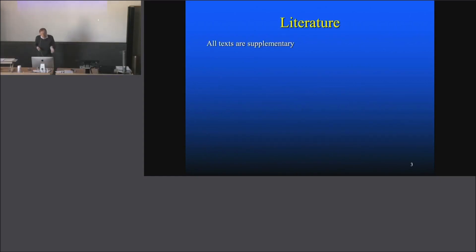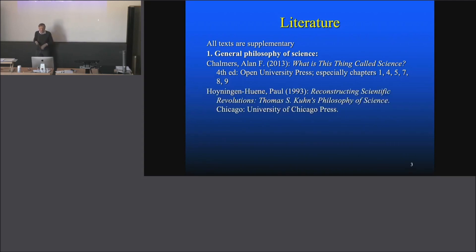All literature is supplementary. There's tons of literature—you can work for hours in the library on philosophy of science. So I'm just giving you a few suggestions if you're interested. In general philosophy of science, there's a fairly good textbook from Chalmers: What Is This Thing Called Science? The chapters relevant here are 1, 4, 5, 7, 8, and 9. You're allowed to read the other chapters as well.